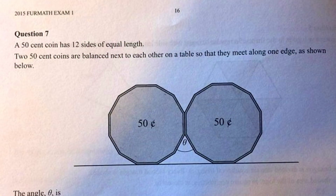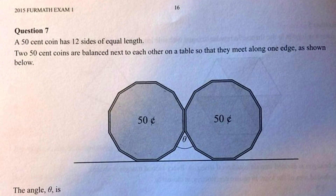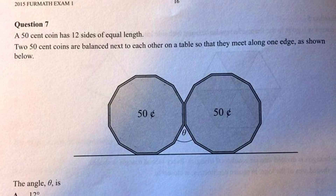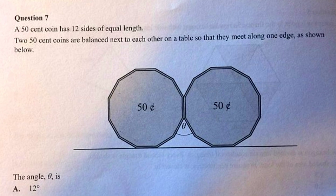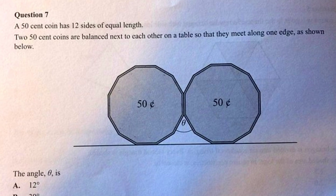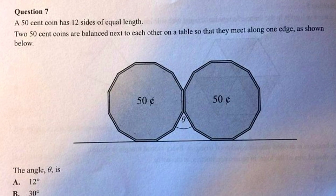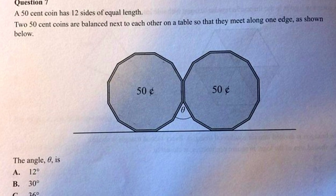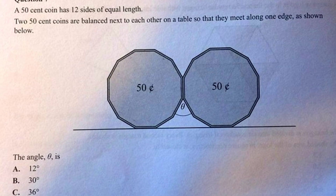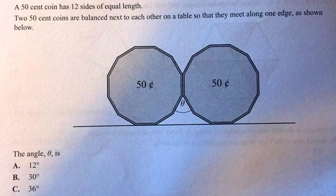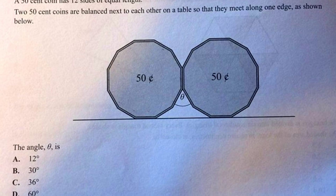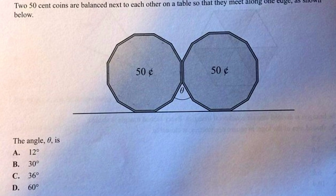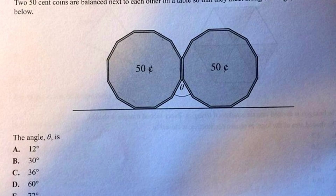A 50 cent coin has 12 sides of equal length. Two 50 cent coins are balanced next to each other on a table so they meet along one edge, the question reads. Students were then asked to work out the degree of the angle between the coins and given multiple choice options ranging from 12 to 72 degrees.